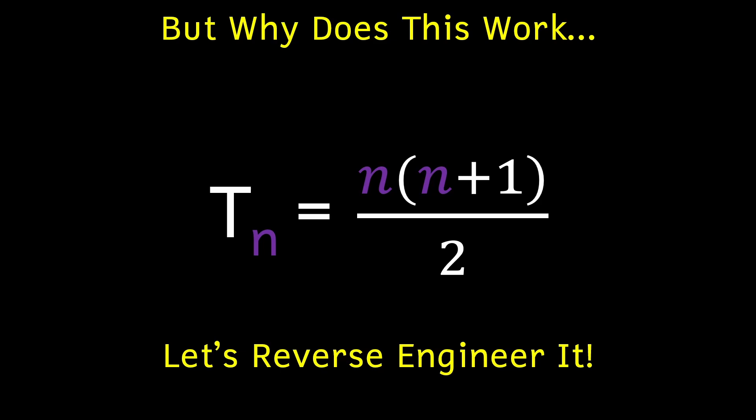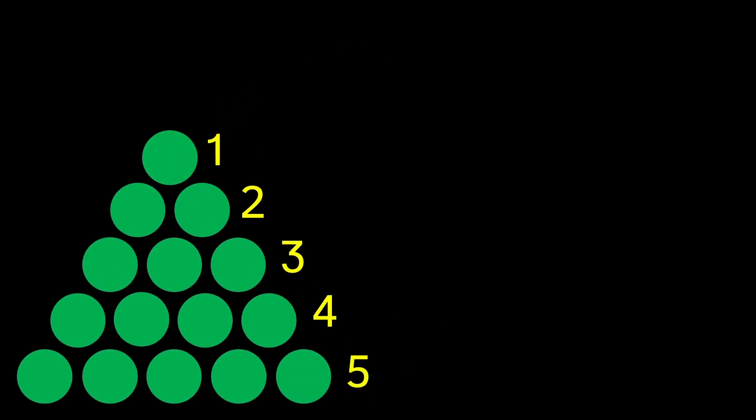Like before, let's use the number five in our example. If we have a triangle that's five rows high, we can see a few things right off the bat. For starters, since this triangle has five rows, we can see that the bottom row is made up of five dots. We also know that for each row we go up by, the number of dots in a row decreases by one. Let's write the number of dots in each row off to the side.